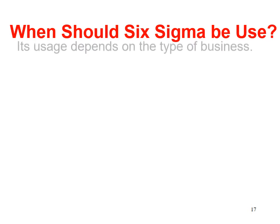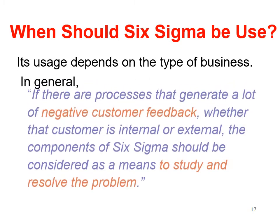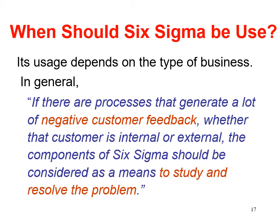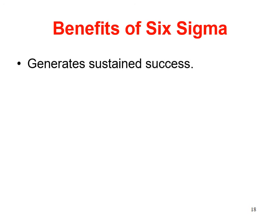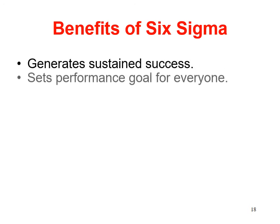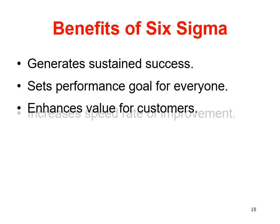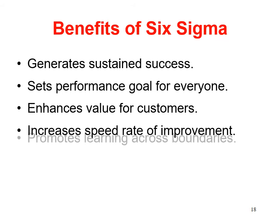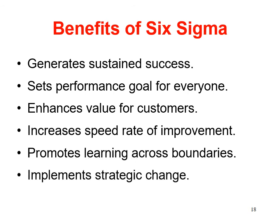When should Six Sigma be used? Its use depends on the type of business. In general, if there are processes that generate a lot of negative customer feedback — whether that customer is internal or external — the components of Six Sigma should be considered as a means to study and resolve the problem. Benefits of Six Sigma: generates sustained success, sets performance goals for everyone, enhances value for customers, increases speed and rate of improvement, promotes learning across boundaries, and implements strategic change.